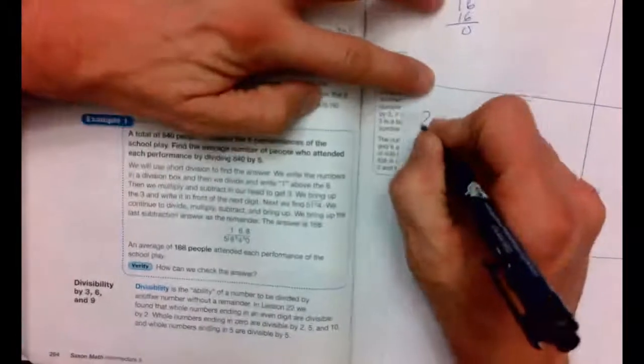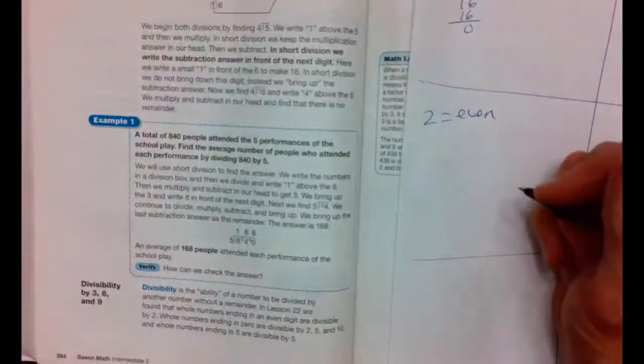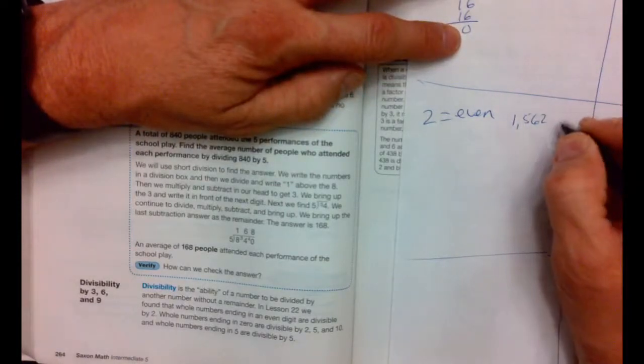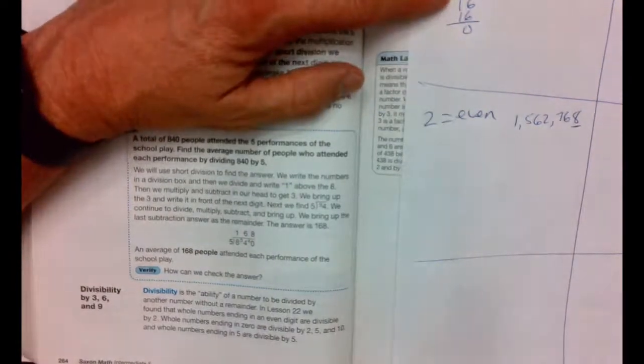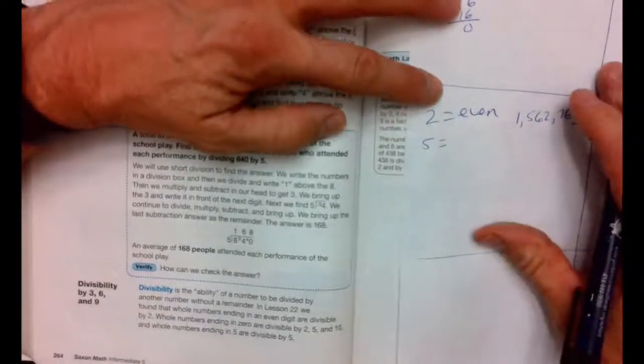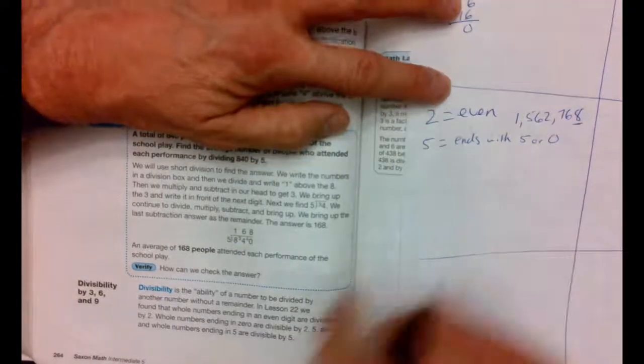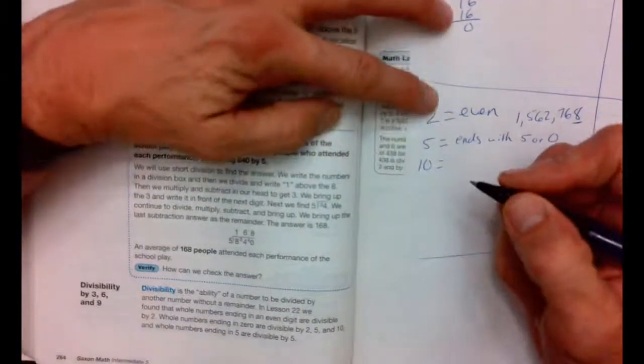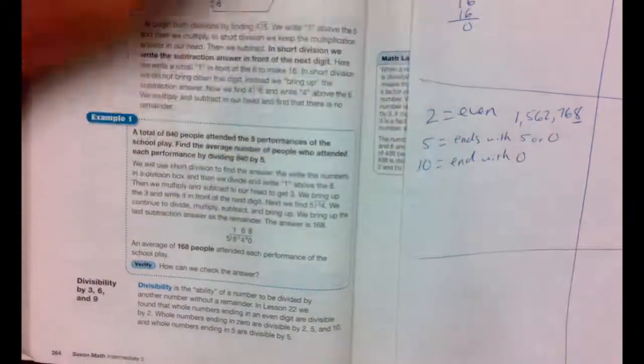Now we want to talk about some divisibility rules. We already have some. Let's review them. The divisibility rule of 2 is any number that is even, ends with an even number, is capable of being divided by 2, so I could say 1,562,768, and you know that would be divisible by 2 because it ends with an 8, which is even. We also studied the divisibility rule of 5. 5 is if it ends with a 5 or a 0. So 5 or 10 or 15 or 20, those are all divisible by 5.